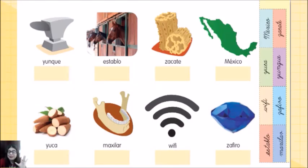Al terminar, vamos a pasar a otra actividad. Esa actividad la vamos a encontrar en la página número 93. Ya que estés en la página 93, vas a encontrar una hojita como esta. Lo que vamos a hacer es colocar en los recuadros vacíos, estos que están aquí, estos, el nombre de las imágenes pero en letra cursiva. Fíjate bien. Aquí nosotros tenemos un yunque y aquí dice la palabra yunque. Establo, zacate, México, yuca, máxila, wifi y zafiro. Entonces, de este lado tenemos unos recuadros los cuales tienen las mismas palabras pero en cursiva. Vamos a ir trabajándolo poco a poquito. ¿Están listos? Vayan por sus tijeras y por su pegamento porque vamos a comenzar.